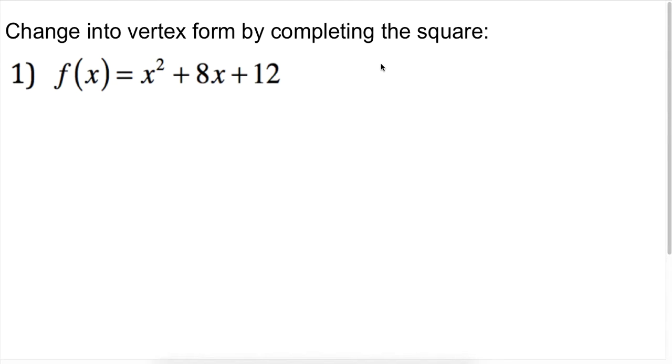So what I'm thinking is, eventually I want this to be some sort of f(x) equals something squared. Maybe I have something after it, maybe I have something before it. But I'm looking for this squared binomial. That's what I mean by completing the square.